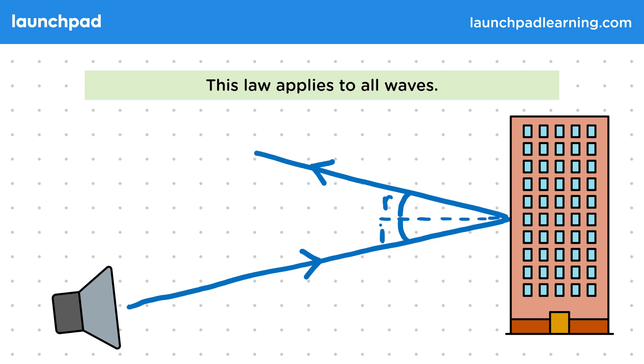These two angles will be the same as given by the law of reflection. But if the sound wave is echoing in this direction, why do we still hear the echo?